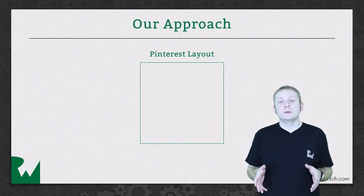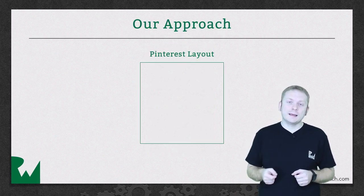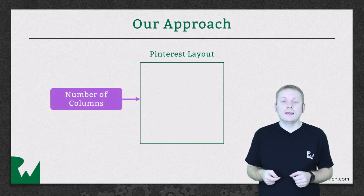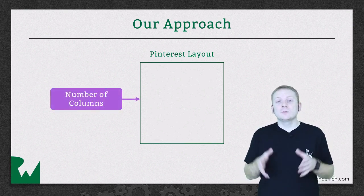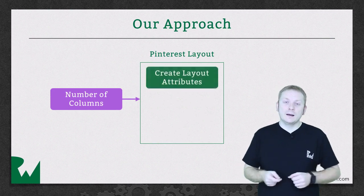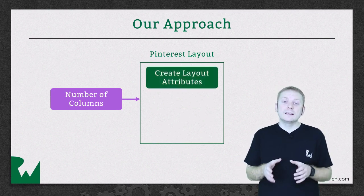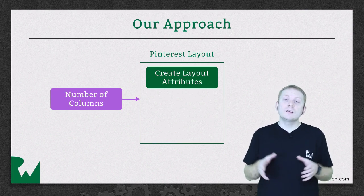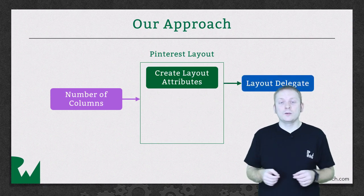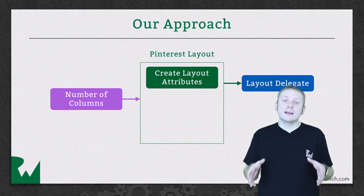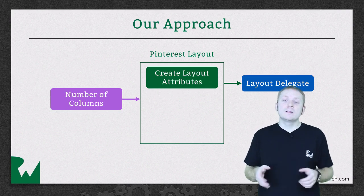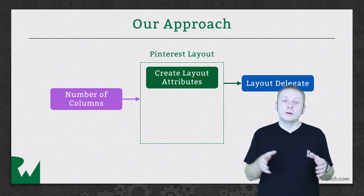There are a number of things that we need to do in order to implement this basic layout. First, we need a way to set the number of columns on the layout, so that these can be taken into account when creating the layout attributes. Then, we actually need to generate those layout attributes, and as part of that, we're going to reach out to our custom delegate — which in this case will be our controller — and ask it to provide the height for each of the cells. This is important because later in the series, that height will actually represent the height of the photo the cell ends up displaying.